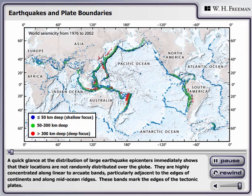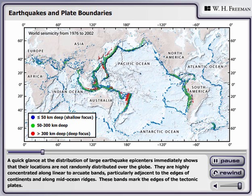A quick glance at the distribution of large earthquake epicenters immediately shows that their locations are not randomly distributed over the globe. They are highly concentrated along linear to arcuate bands, particularly adjacent to the edges of continents and along mid-ocean ridges. These bands mark the edges of the tectonic plates.